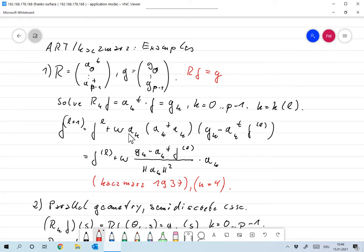So F L plus 1 is F L plus Omega times Ak transpose Ak to the minus 1, Gk minus Ak transpose F L. So that means that F L plus 1 is F L plus Omega times Gk minus Ak transpose F L over norm of Ak squared times Ak, and that's exactly what Kaczmarz defined in his original paper.